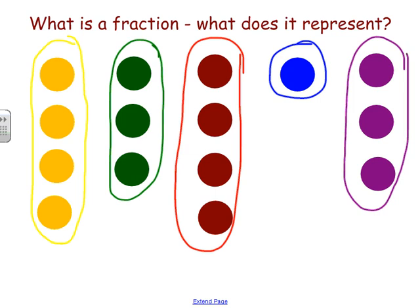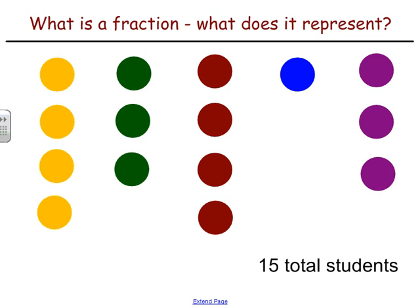In order to talk about what this means with fractions, we have to know a few things. First, we have to know that there are 15 total students, because we have to understand what the total amount of students are and what that denominator is. Based on that, we can talk about the unique section of the students that have that favorite color.